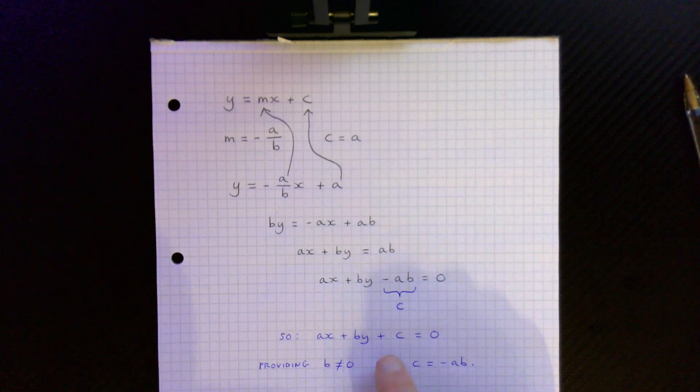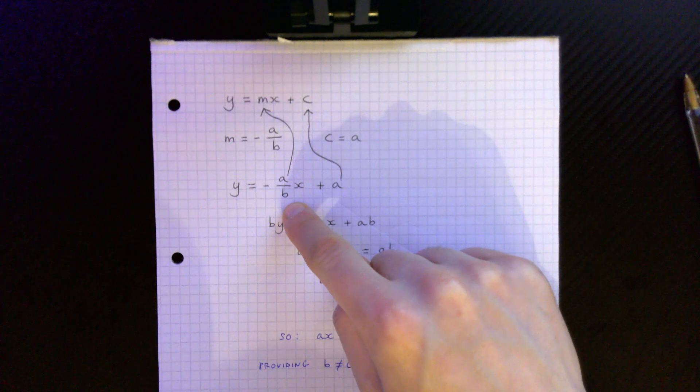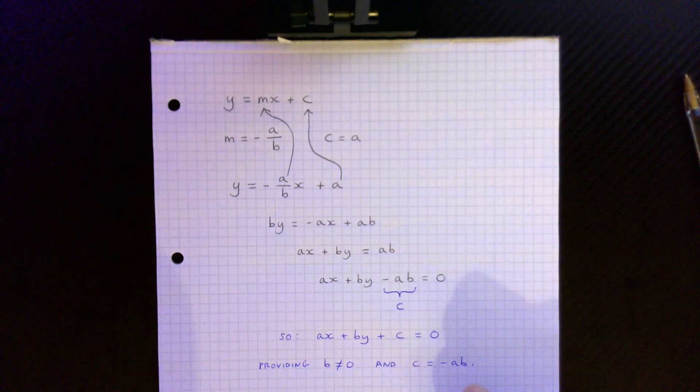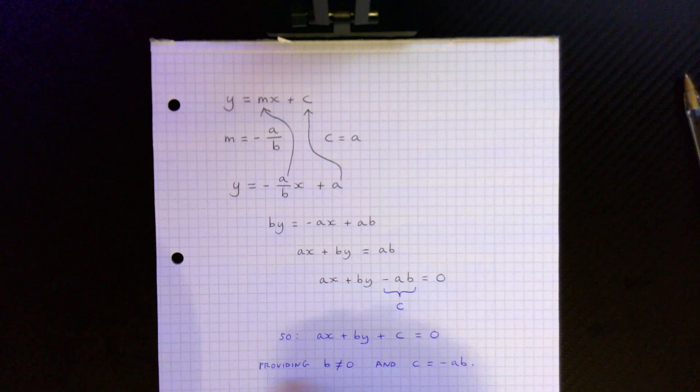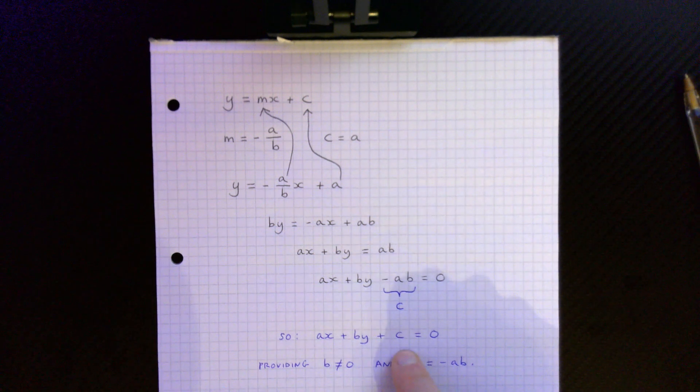Now you'll get a straight line for this equation over here providing that b is not equal to zero because up here we divided by b and you can't divide by zero. And when c is equal to minus ab like so. Okay so providing that these conditions below are met this equation here which is the general equation of a line will give you a line.